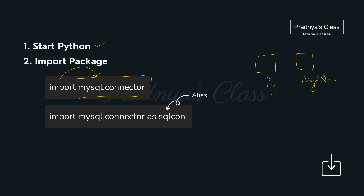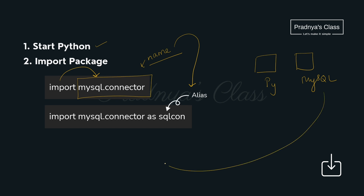This module gives us different functionality for the connectivity. You can see the name is a little longer and complicated, so to make it simple and small we can give an alias to it. Just like mysql, we can give 'sql.con' as the alias keyword. So the command will look like: import mysql.connector as sql.con. This is nothing but an identifier.